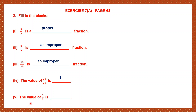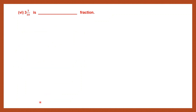Question 5: The value of 5 by 5. When the numerator and the denominator are the same, the answer is 1. Question 6: 3, 3 by 10. Can you see there is a natural number and there is a proper fraction? Such a fraction which has two parts — a natural number and a proper fraction — is called a mixed fraction.